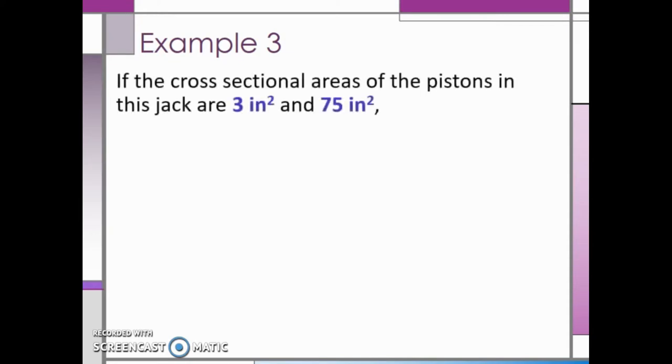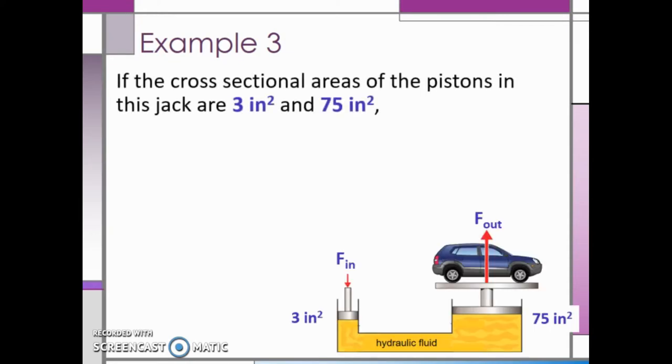In the previous video we discussed the formula for solving a hydraulic jack problem. Now let's take a look at an example. If the cross-sectional areas of the piston in this jack are 3 square inches and 75 square inches.